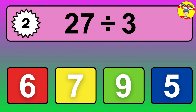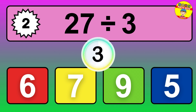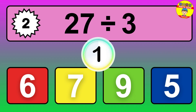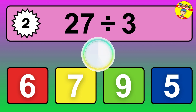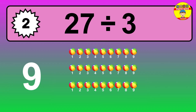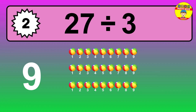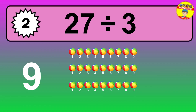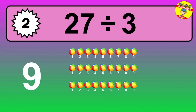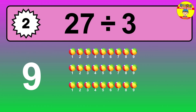27 divided by 3 — time to think. Let's go to the solution. Divide the number 27 by 3. Each group contains 3 units, so dividing 27 by 3 results in 9 equal groups. Thus, the result is 27 divided by 3 equals 9.